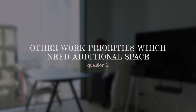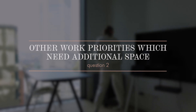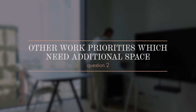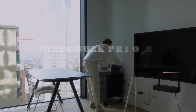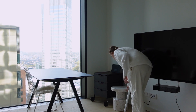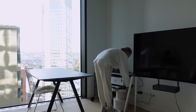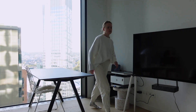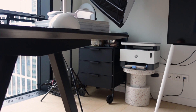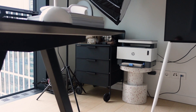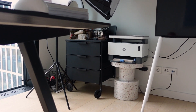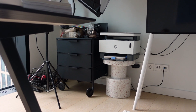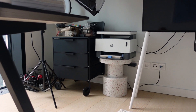The second thing I did was to define other work priorities. Accounting, printing documents — all of this needs additional space. After changing the position of the table, I got an empty area where the table was. This is where my little cabinet and a printer sit. It's not far from the desk and all of this still has its own place in my office.